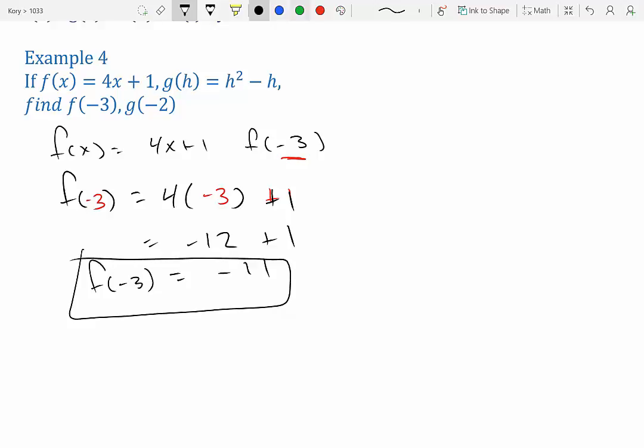Now we have g(h) = h² - h and we want to find g(-2). So that means we're going to replace -2 for every h we see. So we have g(-2) = (-2)² - (-2).